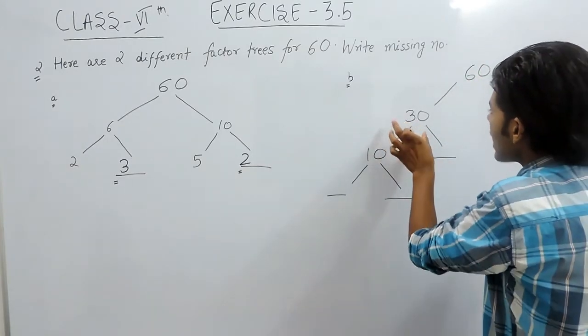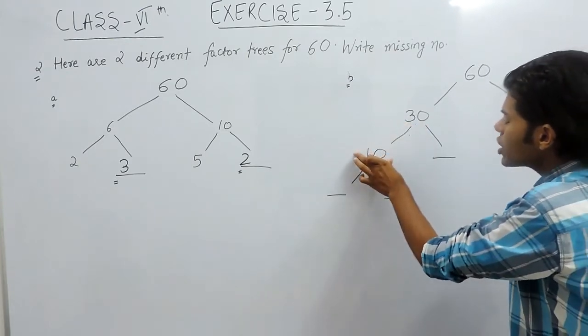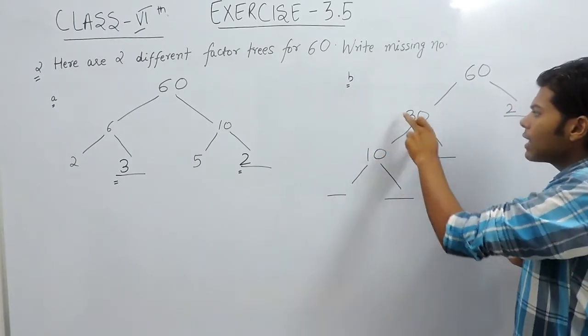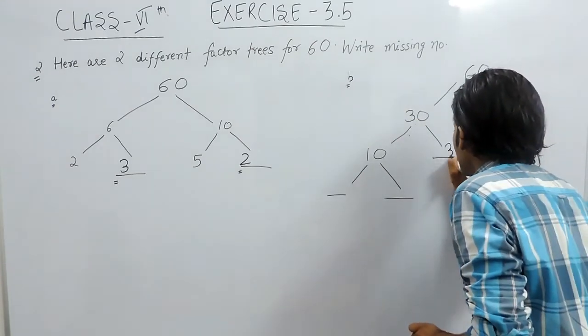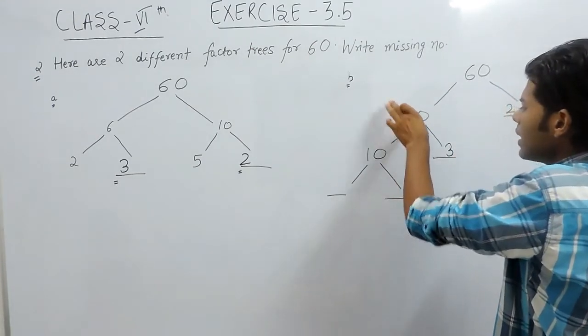Now this one says that the answer should be 30, and with which number we multiply 10, the answer should be 30. So if we multiply 10 by 3, then the answer will be 30.